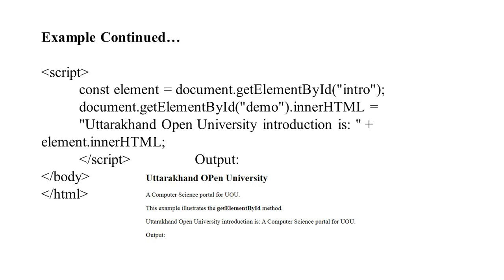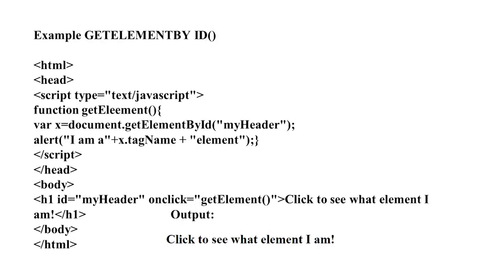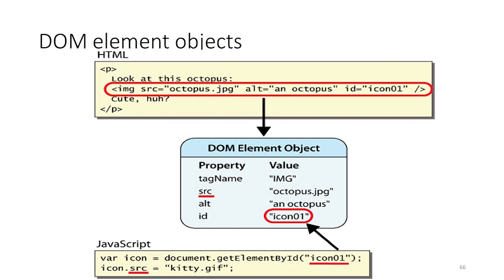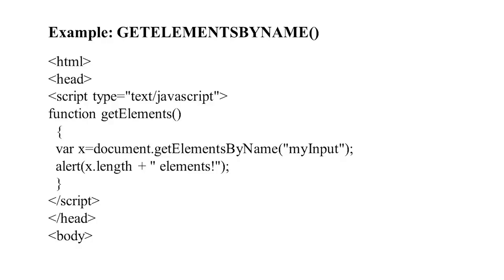Another getElementById example: var v = document.getElementById('myHeader'). On clicking the element with id 'myHeader', it shows what element it is. The output reads 'Click to see what element I am,' displaying the id 'myHeader'. A property example shows an image element with src, alt attributes, and id='icon'.